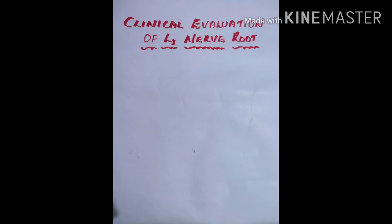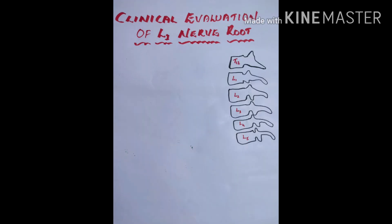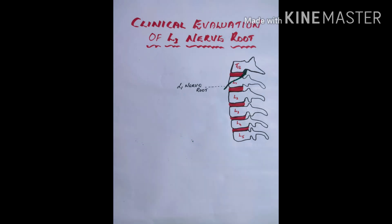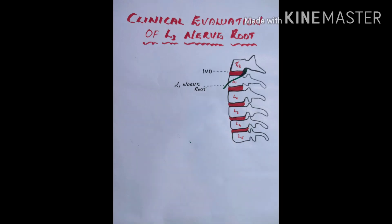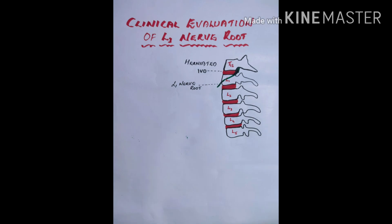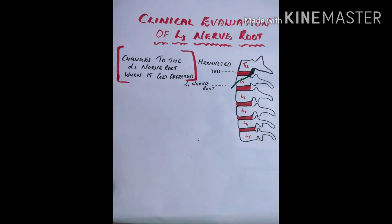First we will discuss the clinical evaluation of the L1 nerve root. Here is a small portion of your vertebral column from T12 to L5 vertebrae; in red ink we mark the intervertebral disc. If there is any herniated disc between T12 and L1 vertebrae, the L1 nerve root will get affected.